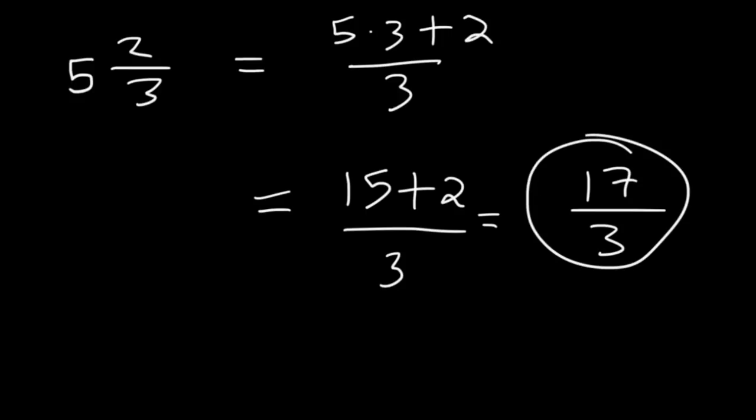Now, let's check our work. Let's go backwards. How can we convert an improper fraction back to a mixed number? So, how can we convert 17 over 3 back into 5 and 2 thirds? So, how many times does 3 go into 17? 3 goes into 17 five times.